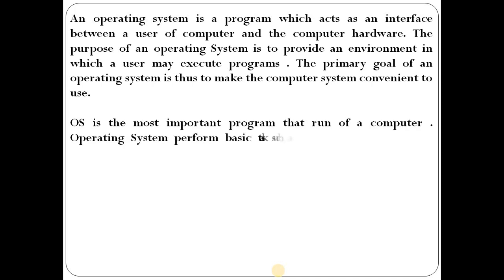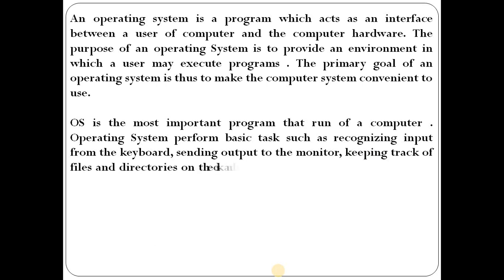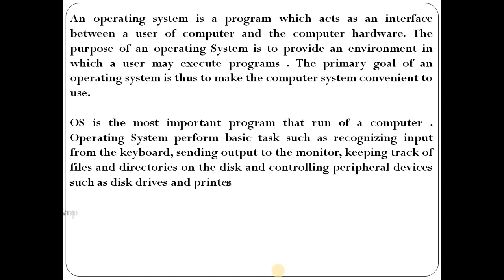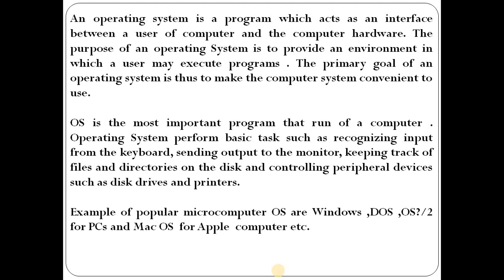The operating system is the most important program that runs on a computer and actually controls the core functions of the computer. Computer systems perform basic tasks such as data management, accepting input from the keyboard, sending output to the monitor, keeping track of files and directories on the disk, and controlling peripheral devices. The operating system plays a vital role in managing system resources, input/output devices, and also controlling peripheral devices of the computer.